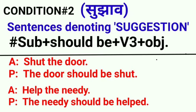See the next case: sentences denoting suggestion — सुझाव के case में। ऐसे imperative sentences जिनसे suggestion का पता चलता हो। Structure: subject, फिर 'should be', और verb का third form, फिर object। Example: active voice में 'shut the door' — passive: 'the door should be shut'. 'Shut' तीनों form में same होता है। Next: 'help the needy' — passive: 'the needy should be helped', मतलब जरूरतमंद की सहायता की जानी चाहिए। जब ऐसे sentences बनाने हों, तब suggestion वाले passive form का use करेंगे।